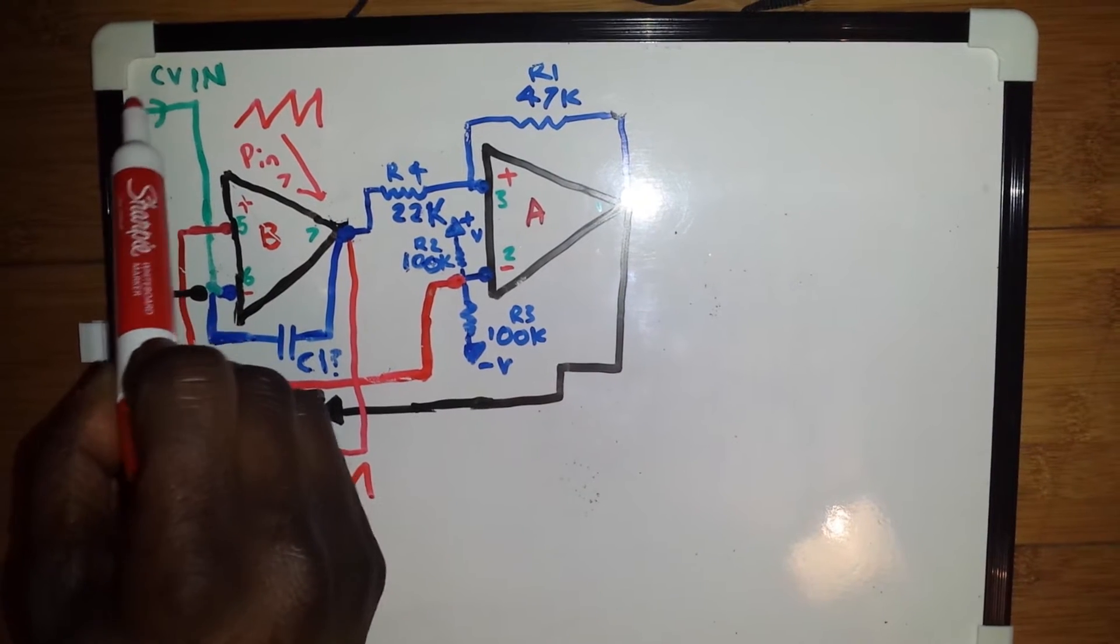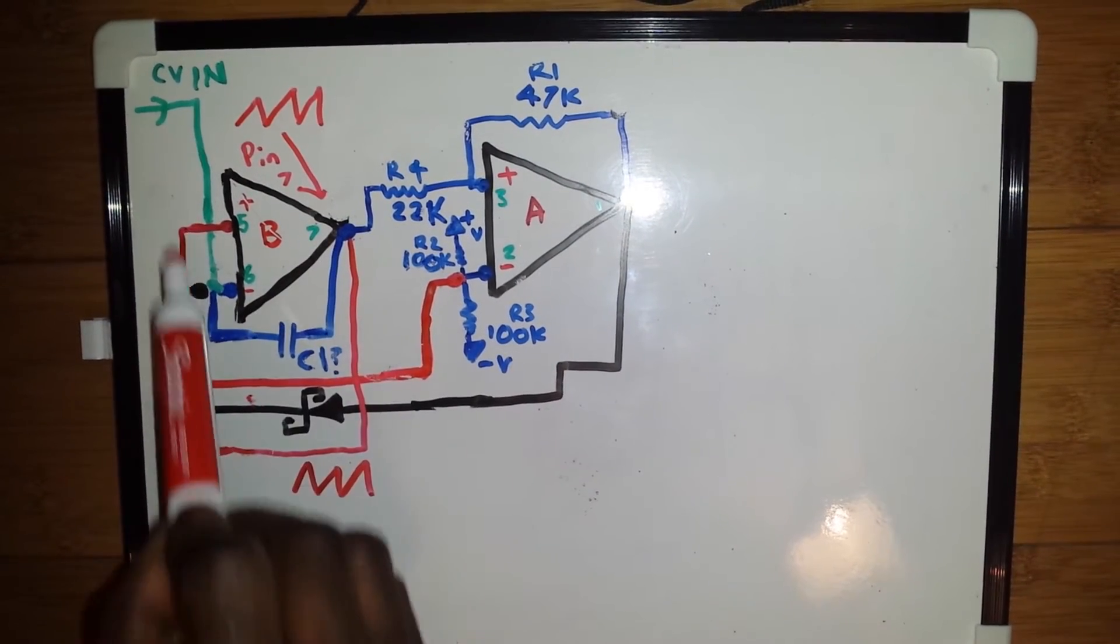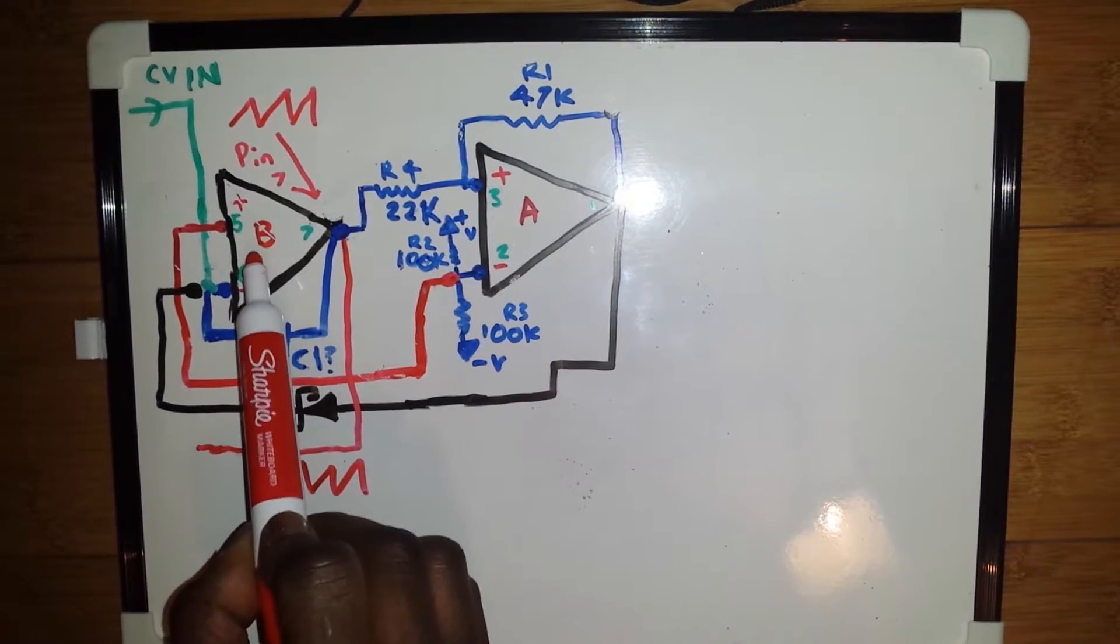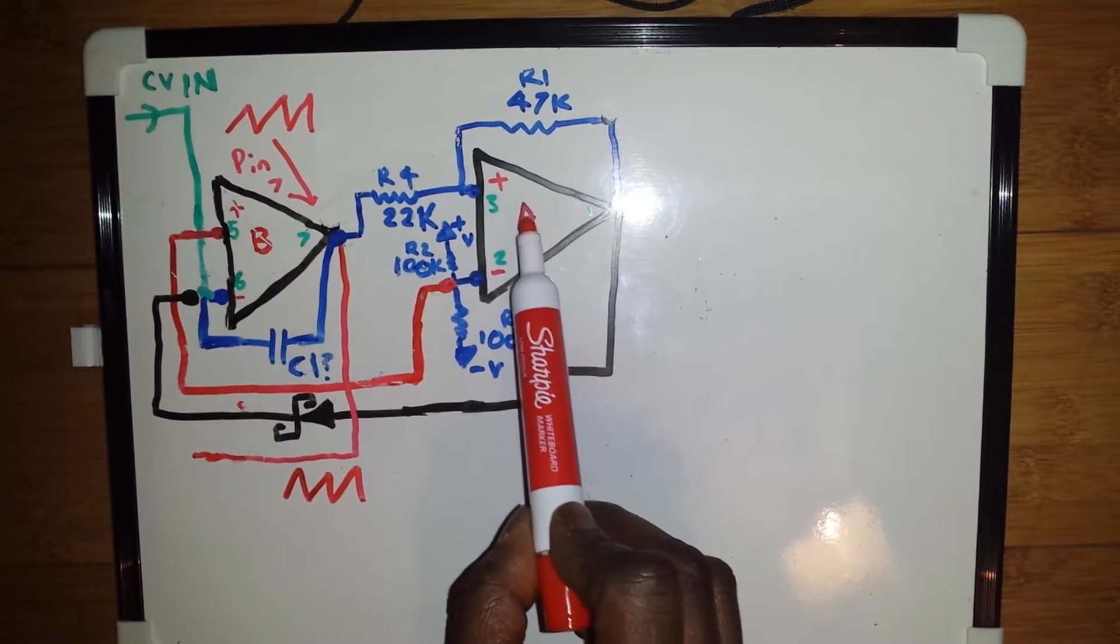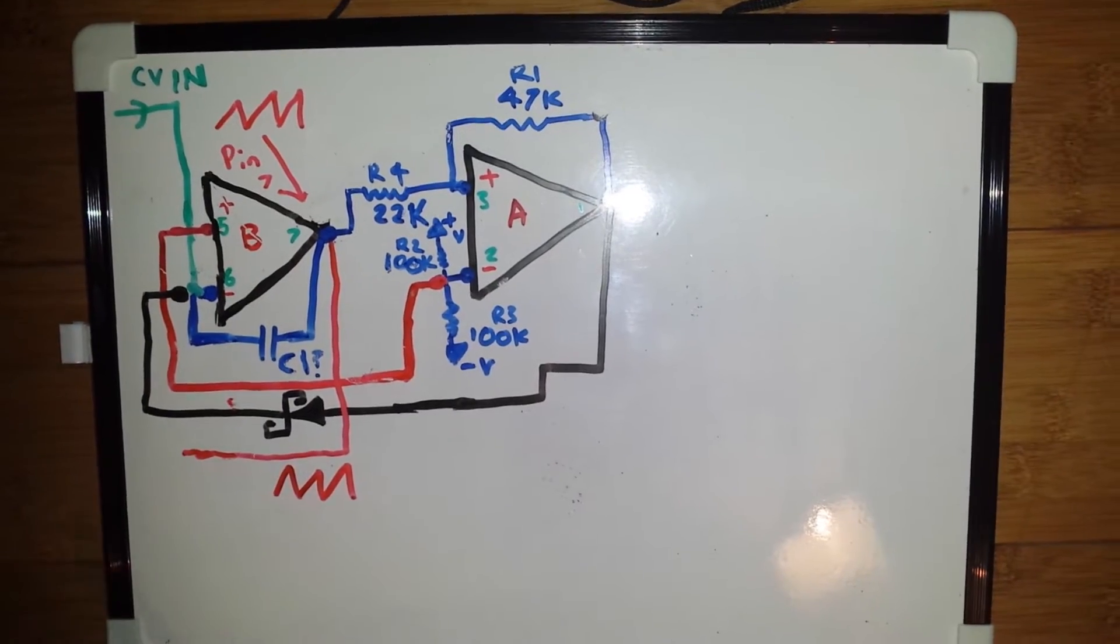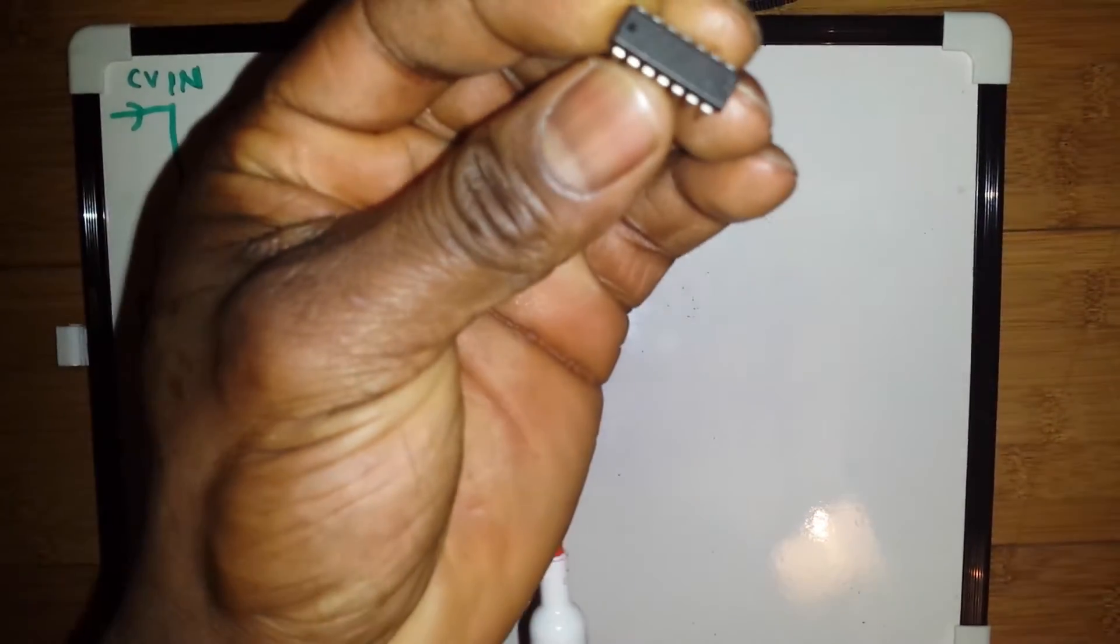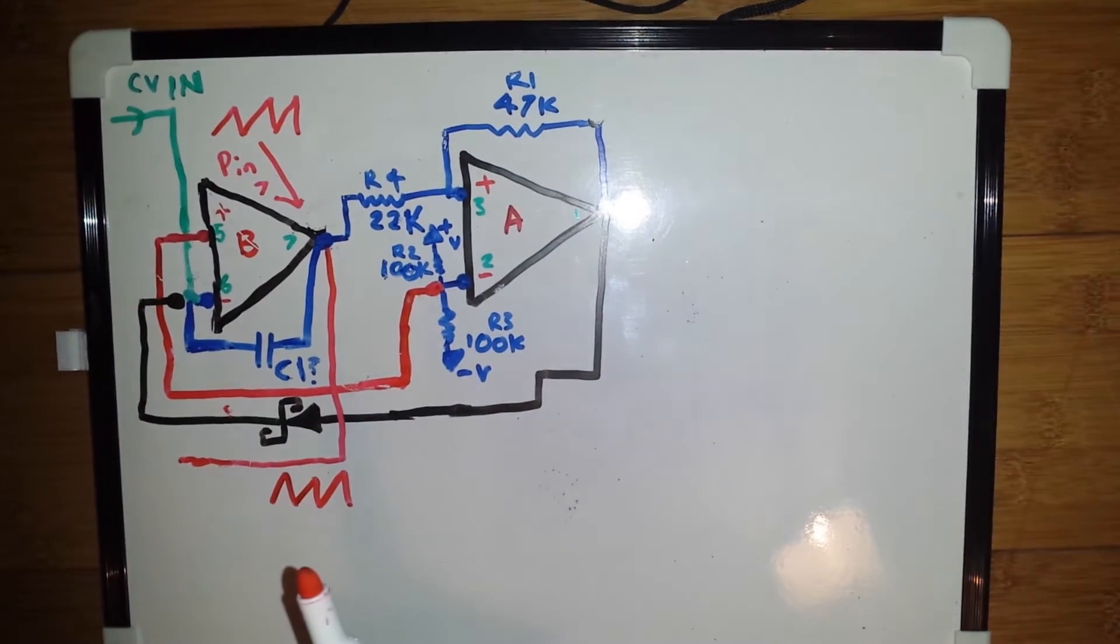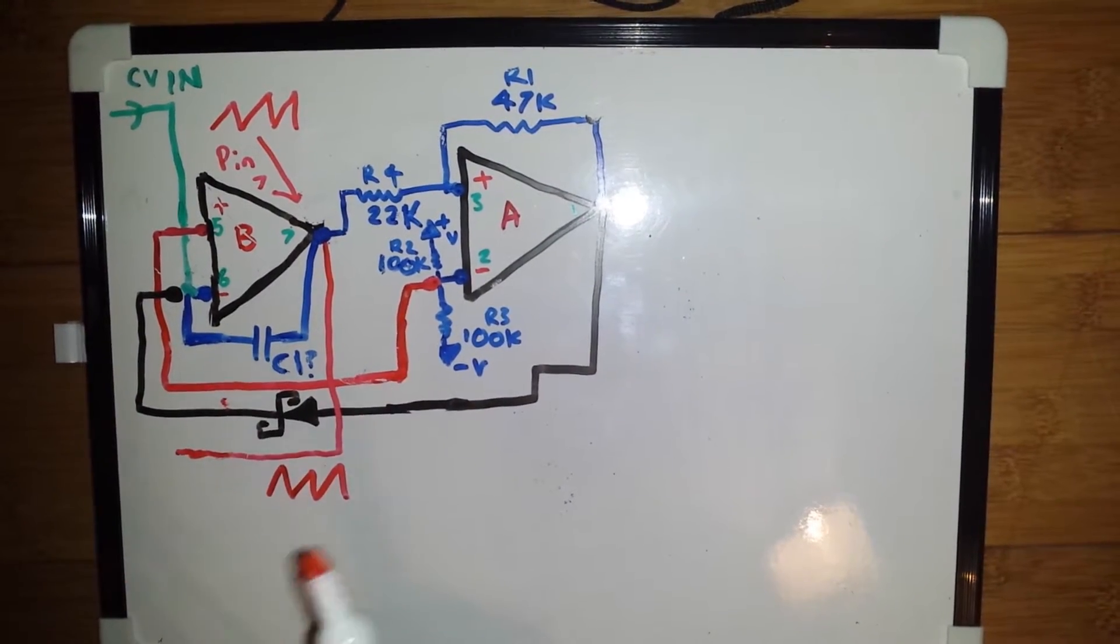If we look up here, this is where our control voltage comes in and goes into the inverting input of op amp B. Now we have op amp A, B, and we have a C and a D. We are using a TL074 op amp which is a readily available part.